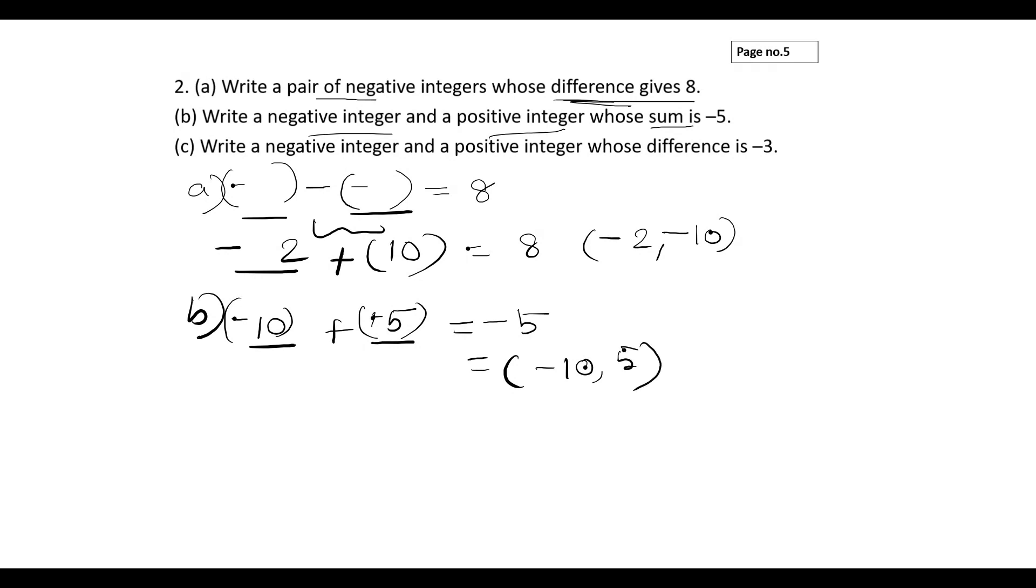Part c: Write a negative integer and a positive integer whose difference is minus 3. So I have to take two integers, one should be negative and one should be positive. I have taken minus 1 and another one is 2. So minus 1 minus 2, this is minus 3.